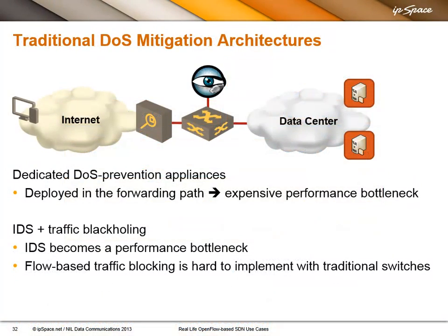Traditionally, you either deploy an IPS on an ingress switch or you deploy an IDS appliance, and these two become choke points. If you have a combination of an out-of-band IDS and you want to use data from that IDS to block particular flows on the switch, it's pretty hard to do — unless you have Juniper gear, where you can use BGP flow spec to drop particular flows, which is what Cloudflare is doing in their network.